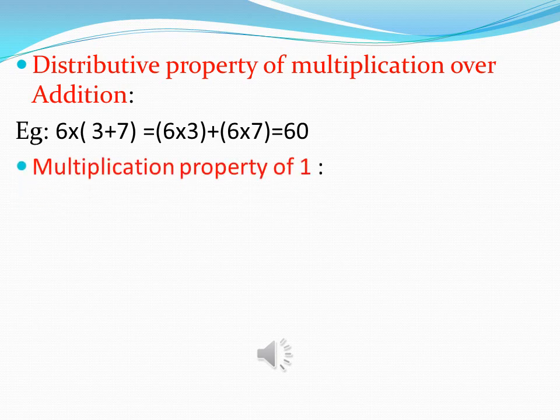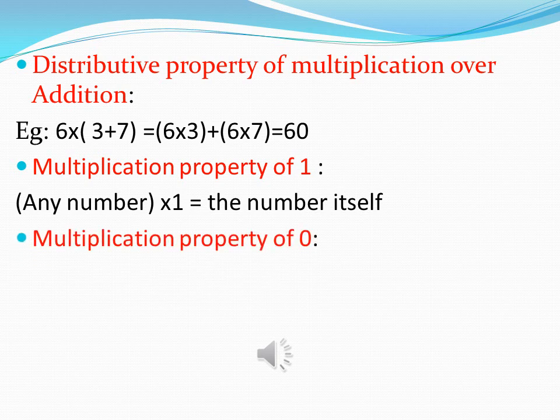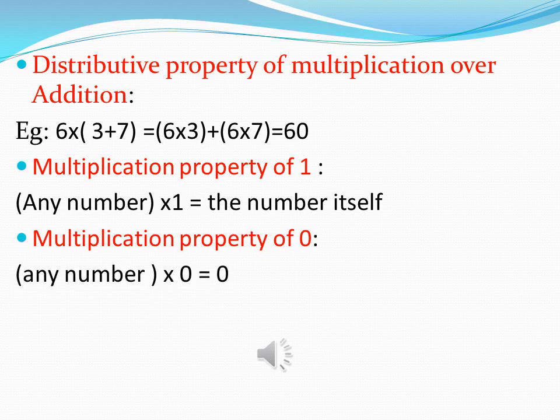The next property, multiplication property of 1. It states that any number multiplied by the number 1 will give us the number itself. Then comes the next property, multiplication property of 0. It states that any number multiplied by 0 will always give us the answer 0.